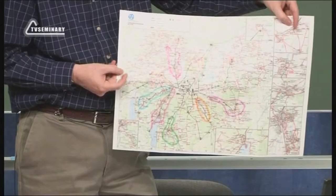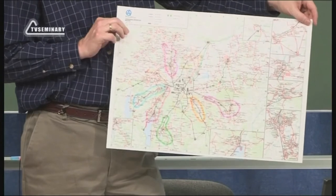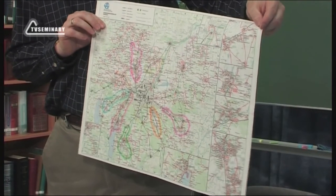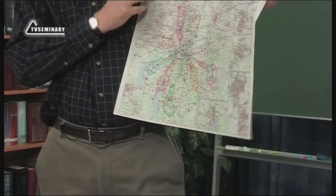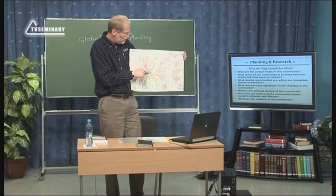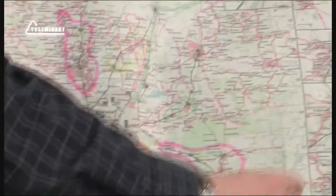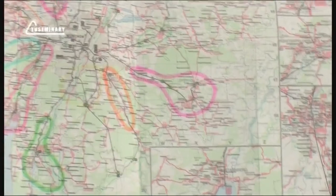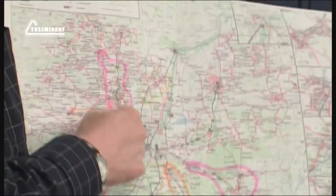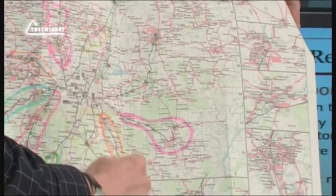What this basically is, is the commuter rail system primarily and the public transportation system. Essentially all the major railroad commuter rail goes into the center of town. And then these would be the outlying towns and villages. You can see these colored areas that sort of follow these rail lines outward.